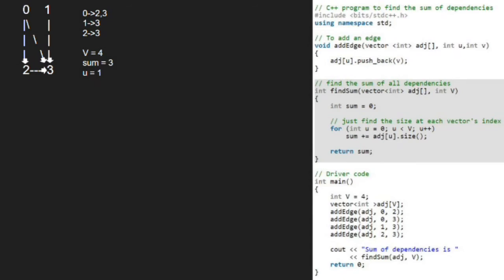Then u becomes 2. Again as size of adjacency list of 2 is 1, we add 1 to sum.